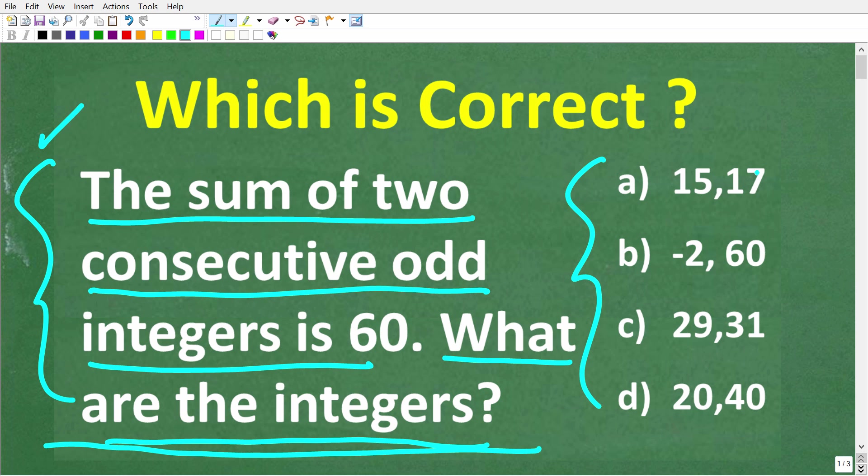Let's take a look at our choices. So A is 15 and 17. B is negative 2 and 60. C is 29 and 31. And D is 20 and 40.